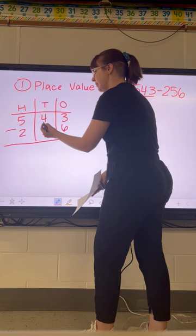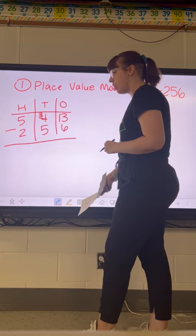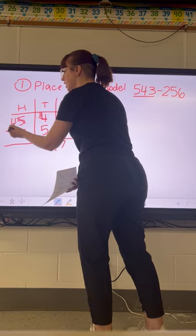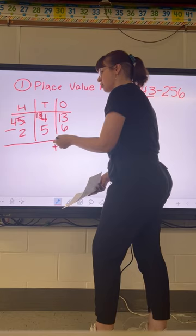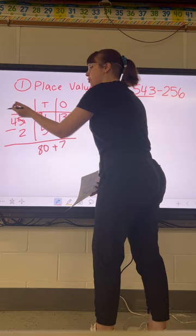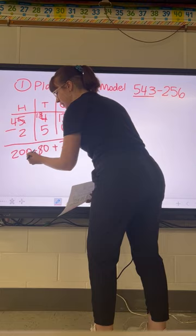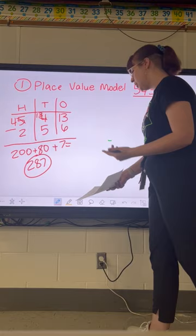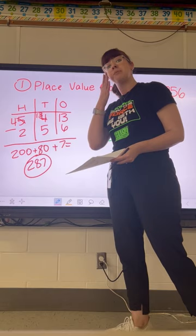We are subtracting 256. This is where this method starts to look more like the standard algorithm for subtraction. We know we cannot take 6 away from 3, so we will need to borrow a 10. Moving that 10 over to the ones column, we now have 13 minus 6, which is 7. Then 3 minus 5 won't work either, so we go next door and take 100, moving it over to the tens place. 13 minus 5 is 8 tens, or 80. And 4 hundreds minus 2 hundreds is 200. We now have our expanded form — easy to add together for an answer of 287.